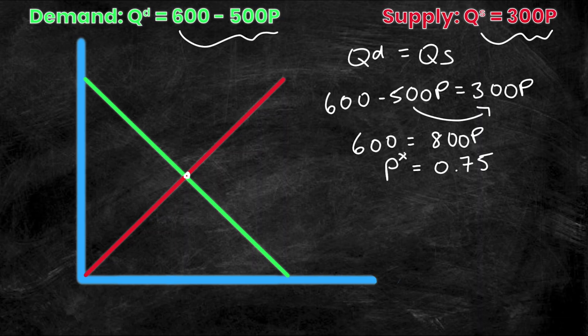Now I know that this is P star and I can now label it on my supply and demand graph and this will be 0.75. Now I know that the next step is to take this P star and to sub it into either the QS or QD equations. And I know that they're both going to give me the exact same Q value and that will actually be my Q star.